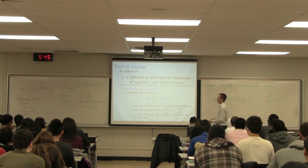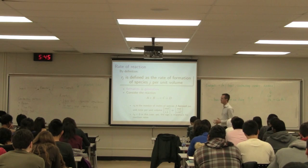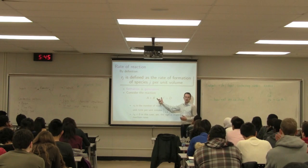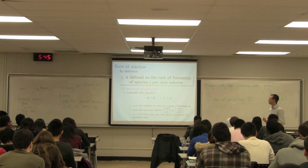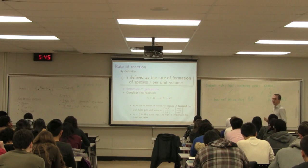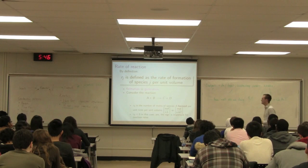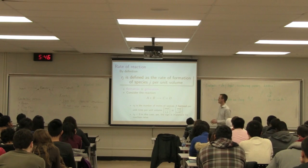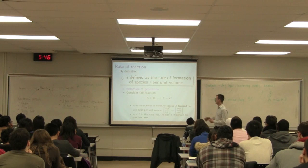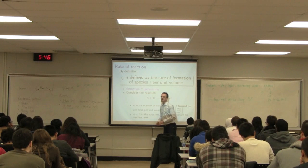Since the definition of rate is with respect to formation, A is on the left-hand side of the equation — we're not forming A, we're consuming it. So in this case, R_A is negative. Very key: the sign is important. R_A, the rate at which we're forming A, is negative because we're consuming it. The negative of formation is consumption.